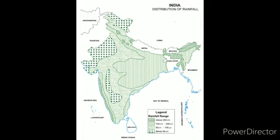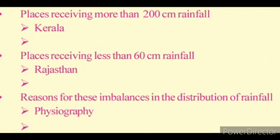This is the map of India which describes the distribution of rainfall. Based on that map, try to write the answers for the questions given and note them in your notebooks.